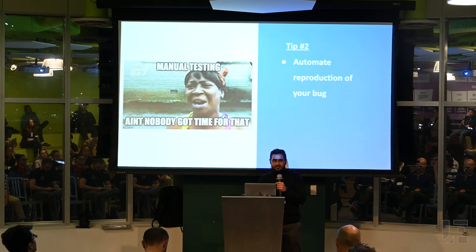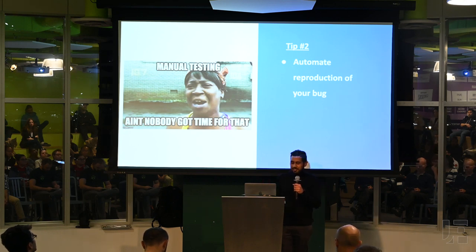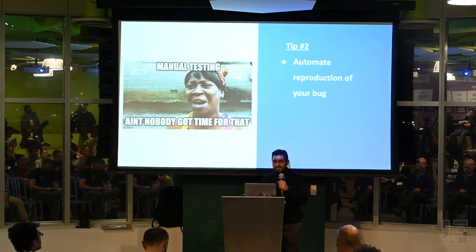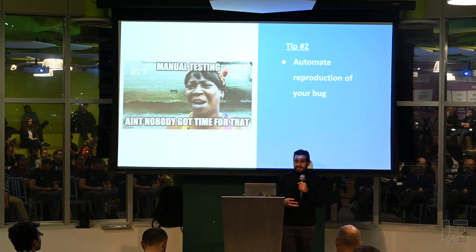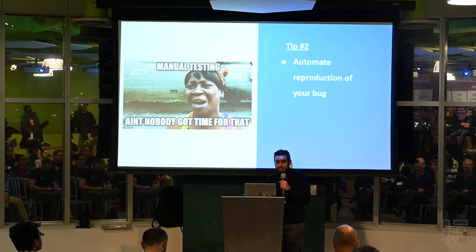Automating the reproduction of your bug will actually help you a lot in the next few steps. There are a few different ways you can do this. If you're a server-side engineer and you know the bug happened when you hit an endpoint, you can simply use Postman — that will be essentially automation. If you want to go further, you can write integration tests or write a script and run it in a console. For example, if I knew that a series of events in React would reproduce the bug, I'd write a script that dispatches those events in order and run it in my console.